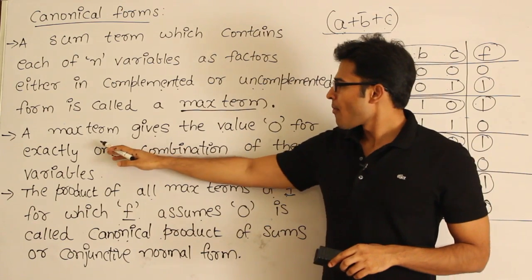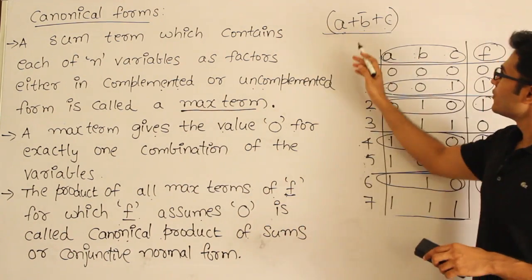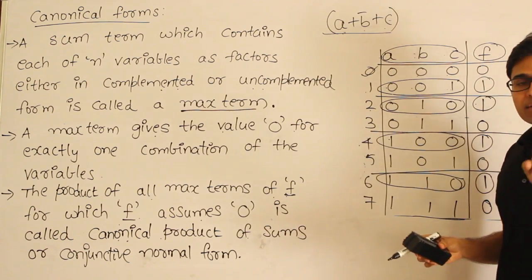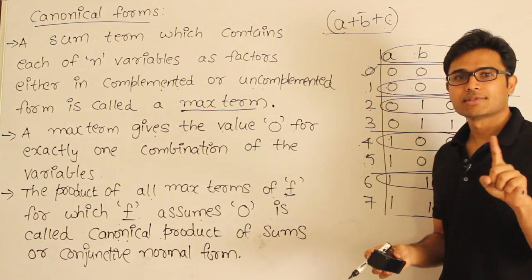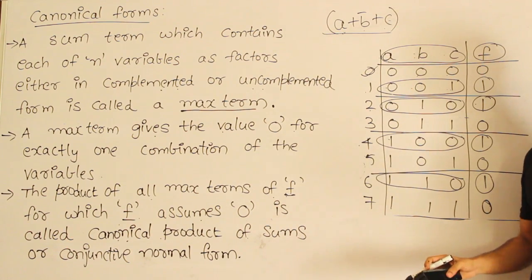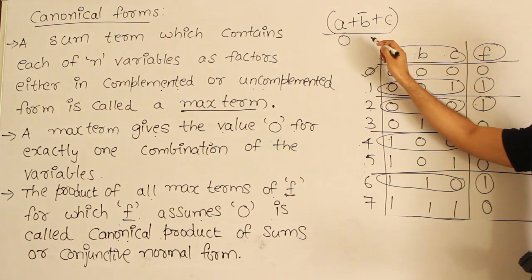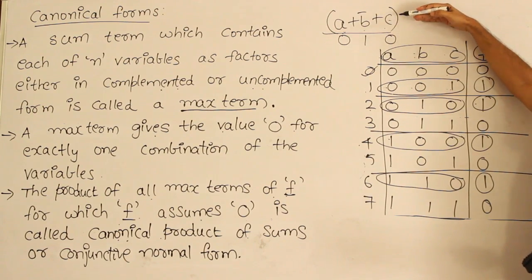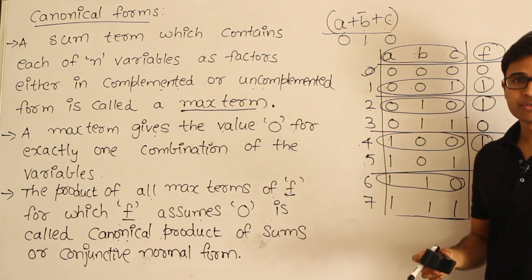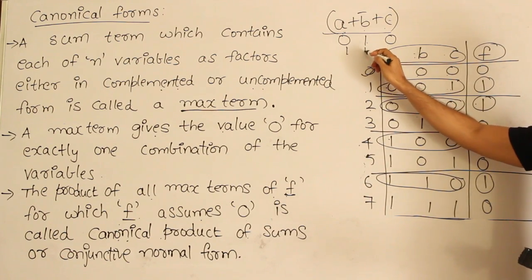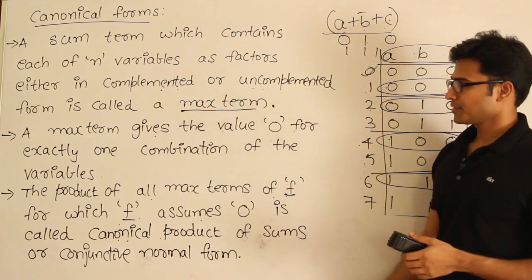A max term gives a value of 0 for exactly one combination of the variables. For example, this particular term — for exactly one combination of the variables it will give 0. Previously, a min term gives 1 for exactly one combination of values. But here, exactly one combination gives 0. What is the combination for which it gives 0? It is 0, 1, 0. If you apply 0, 1, 0 to a plus b prime plus c, you get 0 plus 0 plus 0 — which is 0. For any other combination, like 1, 1, 1, it gives 1.